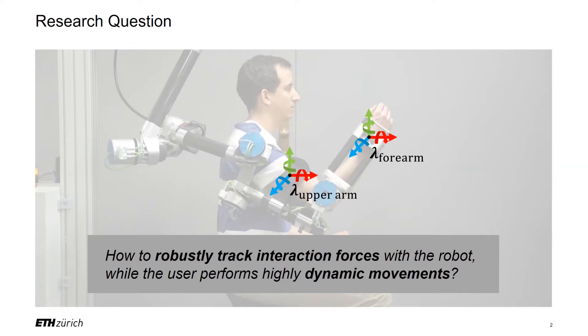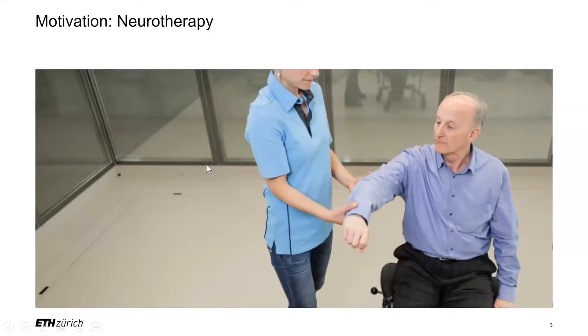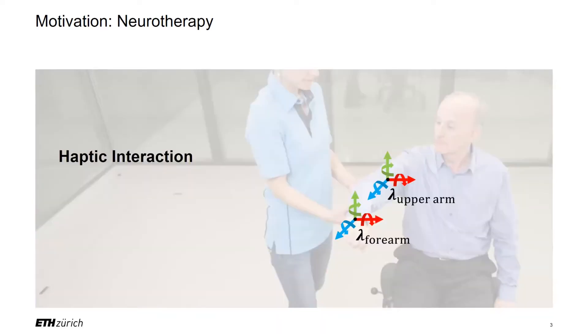You might be wondering what socio-economical motivation stands behind this research. Our main application case for this robot is robot-assisted neurotherapy. In a conventional neurotherapy scenario, the therapist grasps the arm of the patient at multiple locations. This allows them to affect the patient's movement by interaction forces.